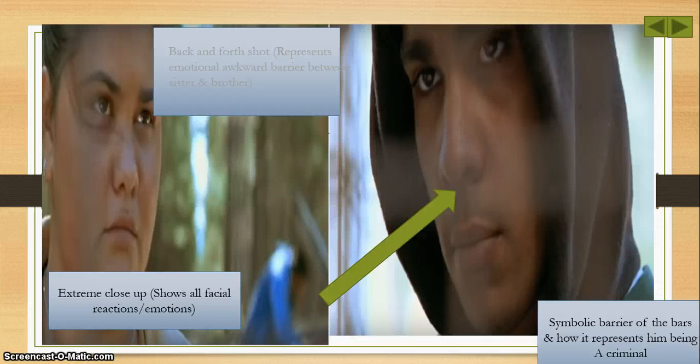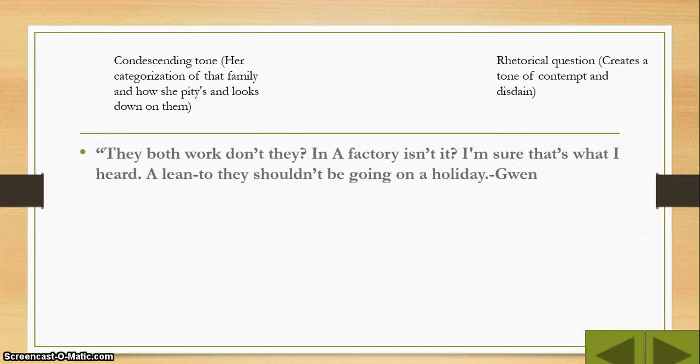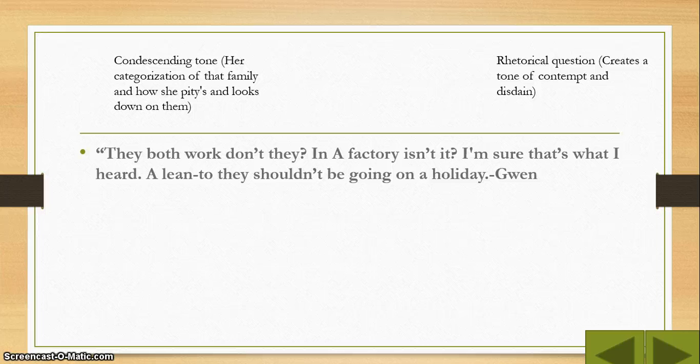Another way this concept is conveyed is in the play Away where Gwen's perception of the people around her is very opinionated. For example in the quote, 'They both work don't they? In a factory, isn't it? I'm sure that's what I heard. They shouldn't be going away on a holiday.' The condescending tone represents Gwen's perception of the other family and how she categorizes them as poor. Also the rhetorical question creates a tone of contempt and disdain. The similarities shown between the two texts present an interconnection through new perceptions being transformed into these characters, further displayed later on throughout the text.